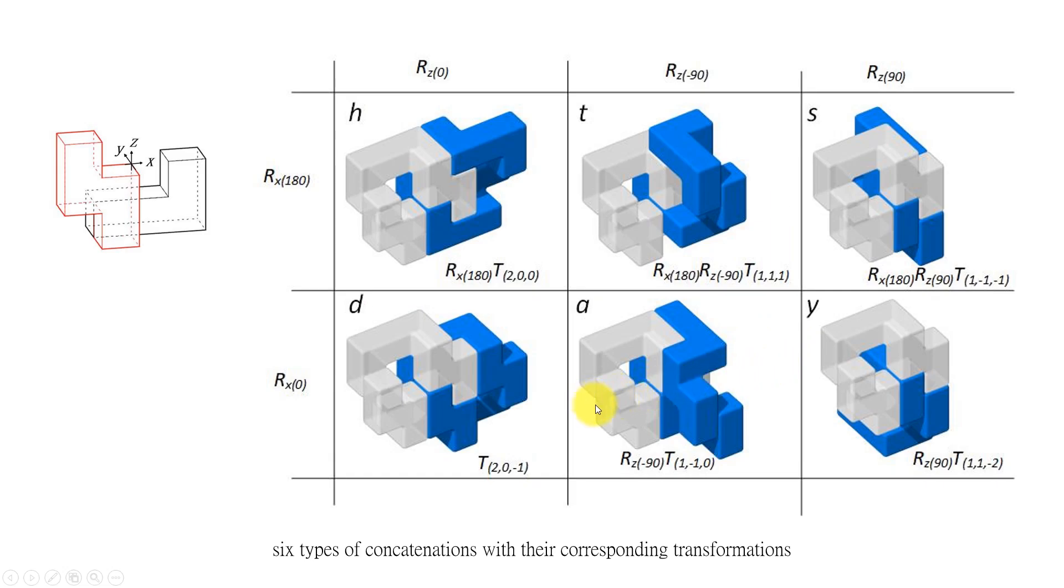We analyzed all possible concatenation and realized there are totally six of them. They can be categorized with the columns depending on the rotations on the z-axis for the initial pair to the concatenating pair, or we categorize in terms of rows which can be distinguished by whether it consists of a rotation on the x-axis or no rotations.